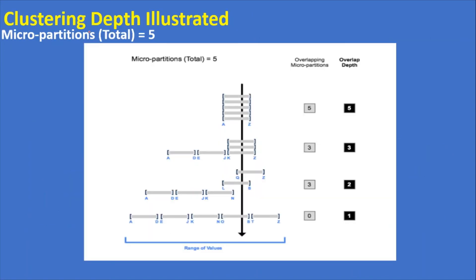Now we will see the clustering depth illustrated with a diagram copied from Snowflake documentation. We assume total micro-partitions equal to five. In the first example, all values from A to Z are stored across all five partitions, meaning data overlaps in every partition. Therefore, overlapping micro-partitions are five and the overlap depth is five.